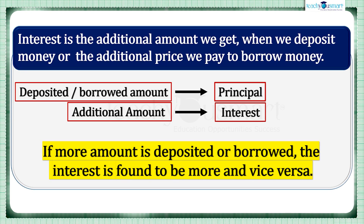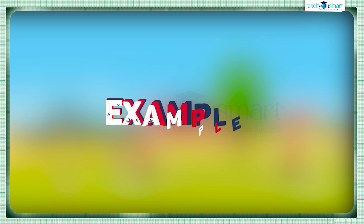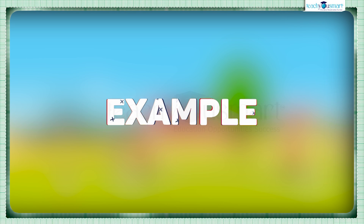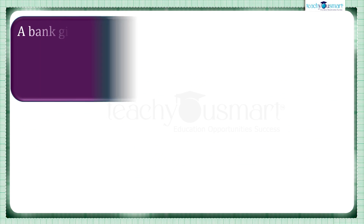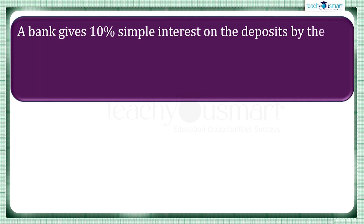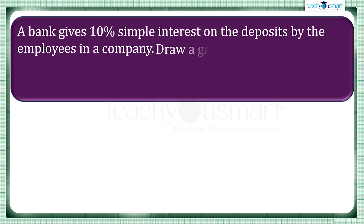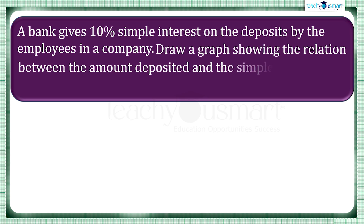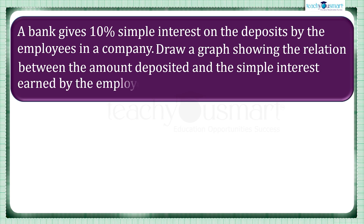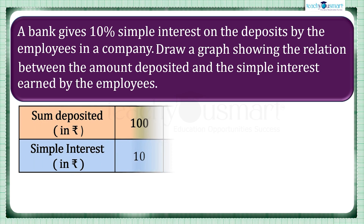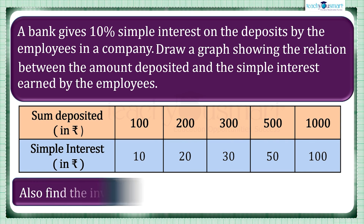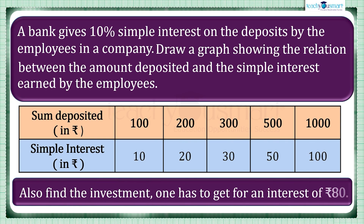Here we are only discussing simple interest in this video. Let's see an example: a bank gives 10% simple interest on the deposits by the employees in a company. Draw a graph showing the relation between the amount deposited and the simple interest earned by the employees. Also find the investment one has to make to get an interest of 80 rupees.